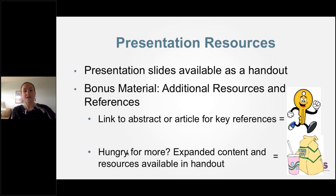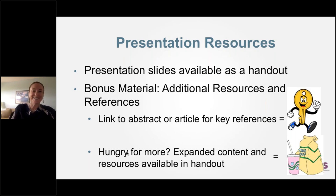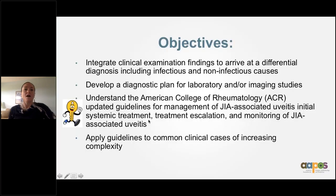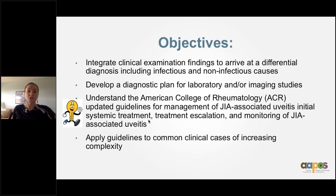There's expanded content and research available in the handout for other topics shown by a takeout symbol, since we have been doing a lot of takeout lately in this country. The course objectives are to integrate clinical examination findings to arrive at a differential diagnosis, develop a diagnostic plan for laboratory and imaging studies, and understand the ACR updated guidelines for management of JIA-associated uveitis in systemic treatment, escalation of treatment, and monitoring JIA-associated uveitis.